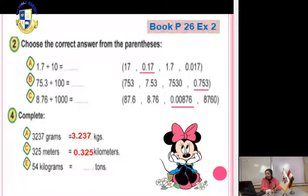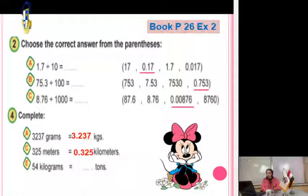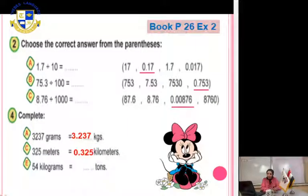325 meters equals how many kilometers? Smaller to bigger unit — divide by 1000. The answer is 0.325. Last one: 54 kilograms equals how many tons? Kilogram is smaller, ton is bigger — divide by 1000. Put cover zeros, move decimal point 3 digits to the left. The answer is 0.054 tons. We have finished our lesson — thank you all, bye bye!